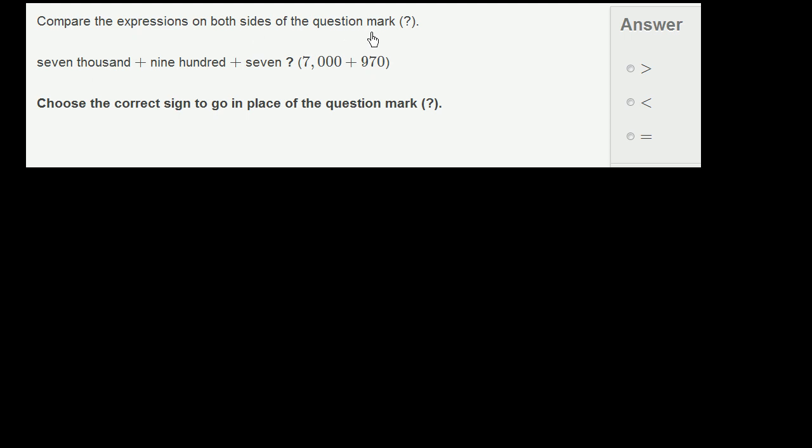Compare the expressions on both sides of the question mark. So on the left-hand side of the question mark, I have 7,907. So it's 7,000 plus 900 plus 7, which is going to be the same thing as 7,907.